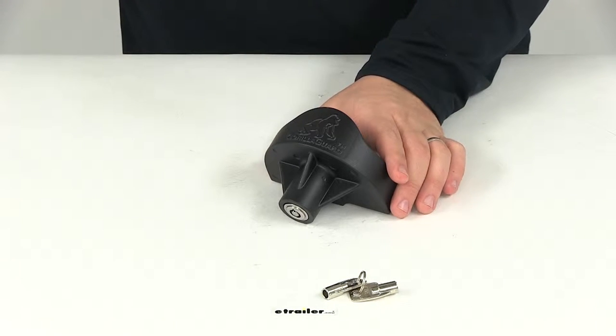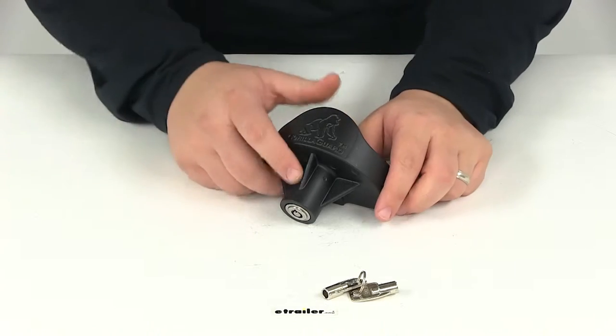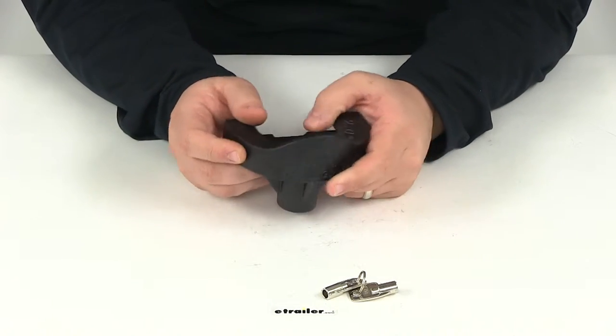Today we're going to be taking a look at part number 63228. This is the Tow Ready Gorilla Guard Trailer Coupler Lock for 2-inch couplers.